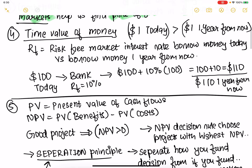Time value of money is an important concept because a dollar today is greater than a dollar a year from now. You can take the money you have, put it in a bank, and get a risk-free rate of return. If you get 10% return on $100 today, you make $10 more in a year. So $100 today equals $110 a year from now — giving $100 today versus $110 a year from now is the same.